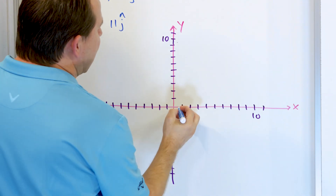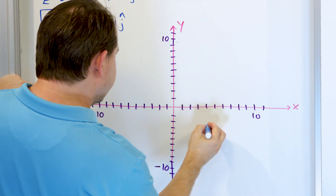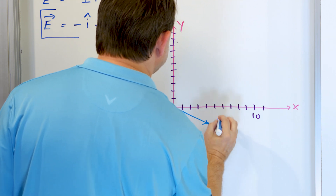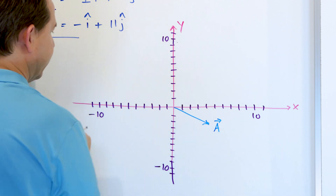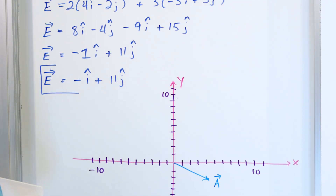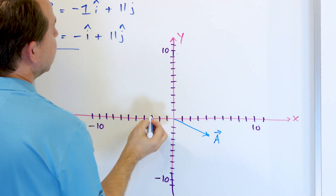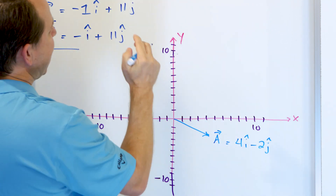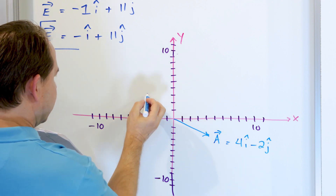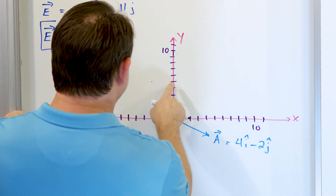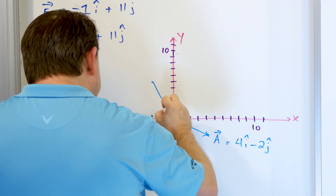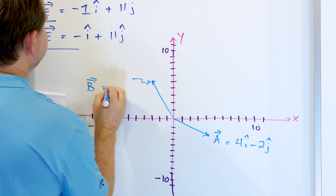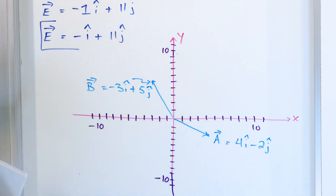Now we have everything in place to graph the vectors. Vector A is 4i minus 2j — so 4 in the x direction and negative 2 in the y direction, which means vector A points to the right and slightly down. Vector B has negative 3 in the i direction and positive 5 in the j direction — so we go negative 3 in x and up 5 in y, landing up and to the left.